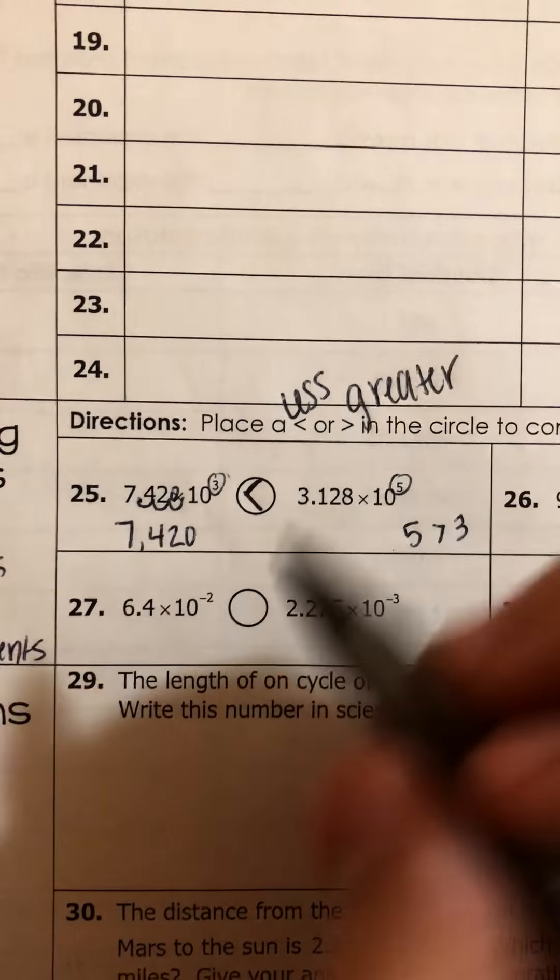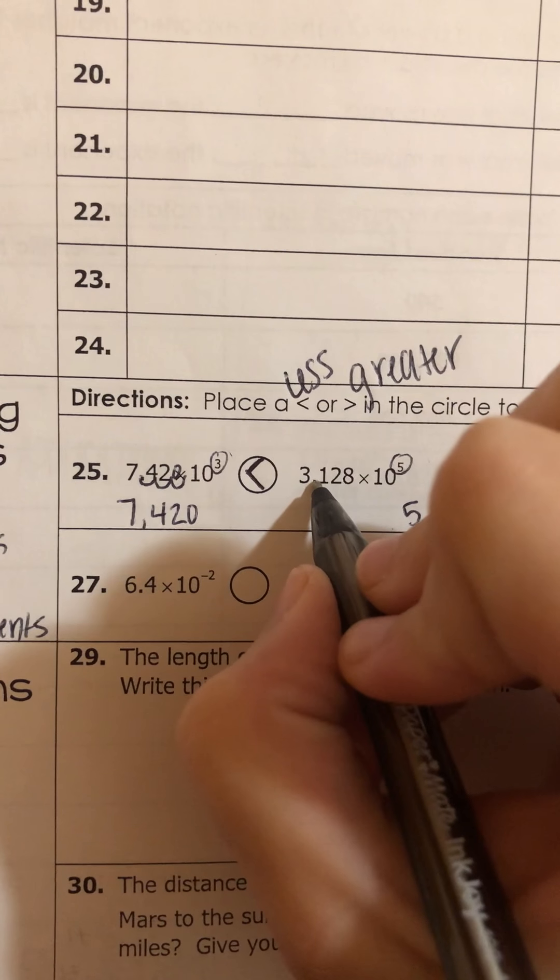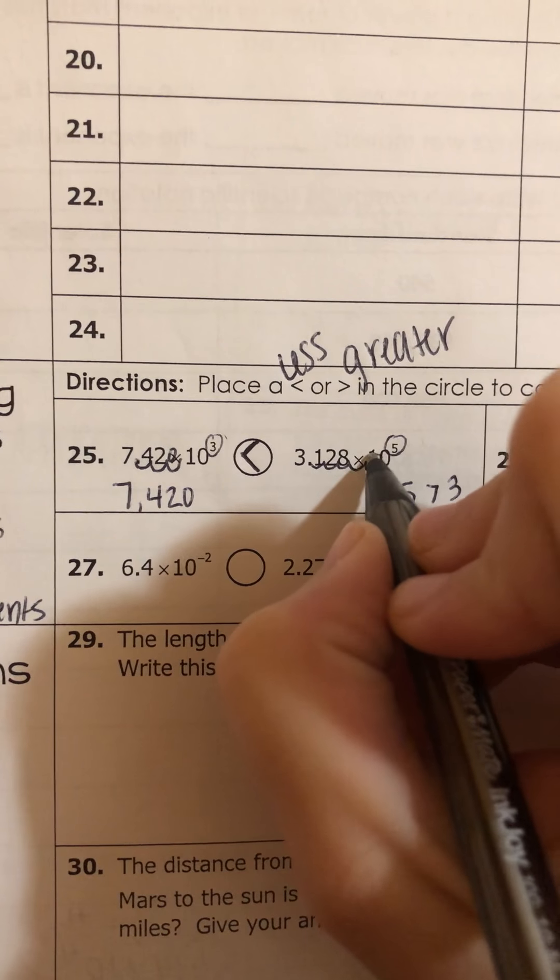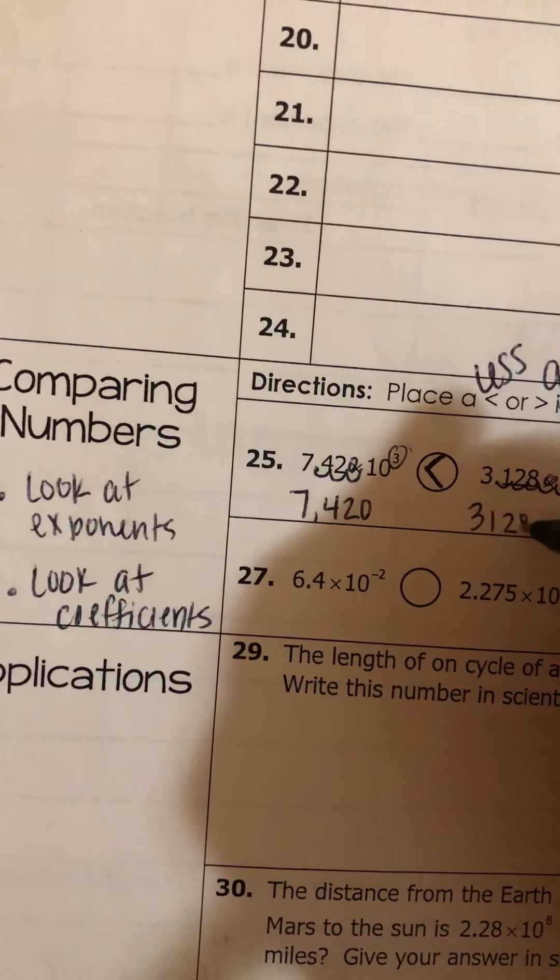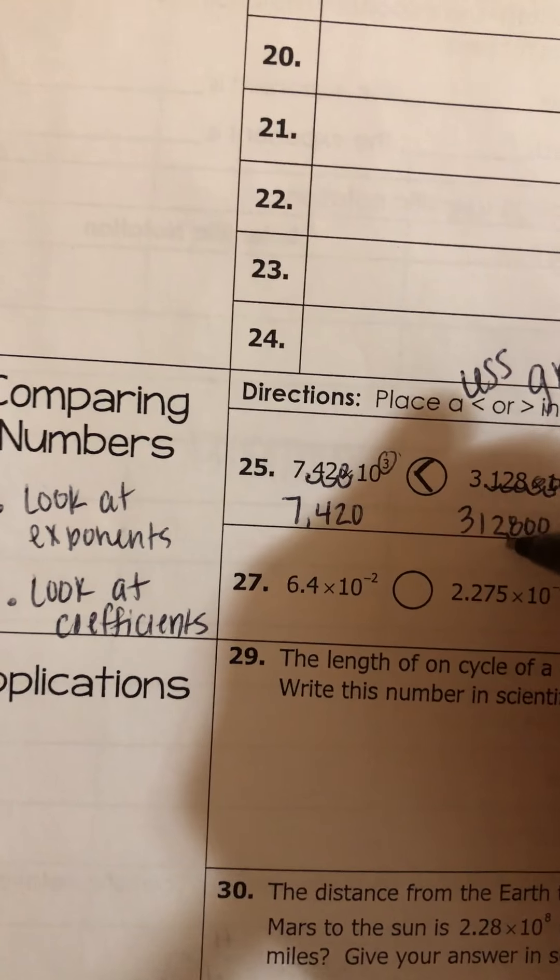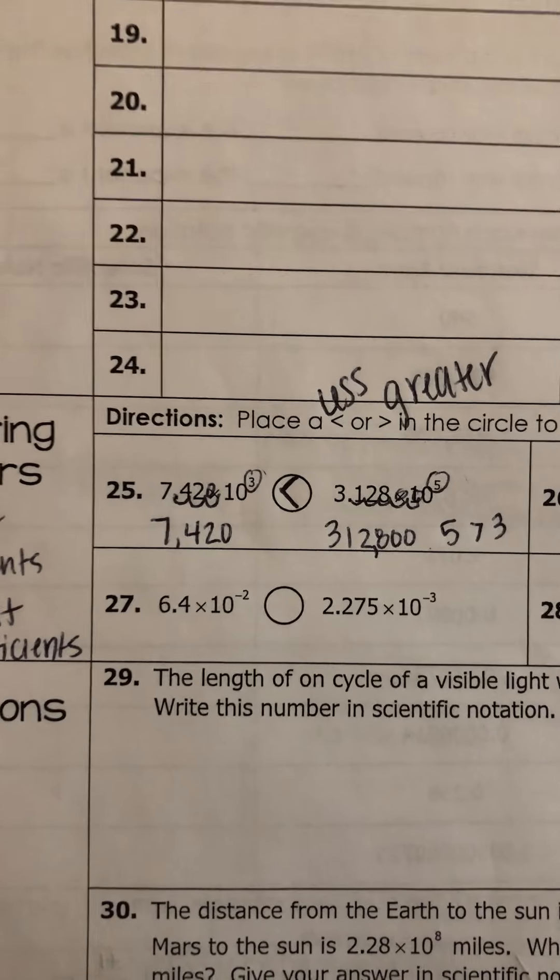So this number is 7,420. And then this number is 5 swoops to the right. So 1, 2, 3, 4, 5, fill in two 0s. And we have 3, 1, 2, 8, 0, 0, which makes this number 312,800.